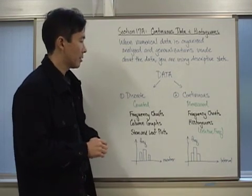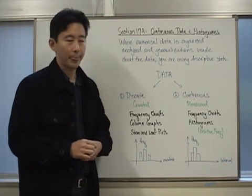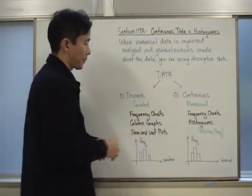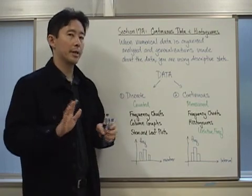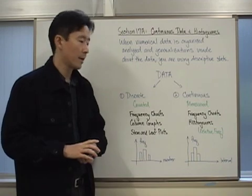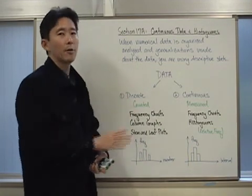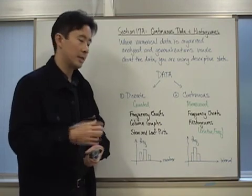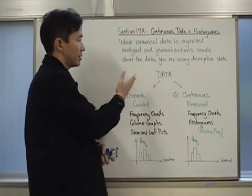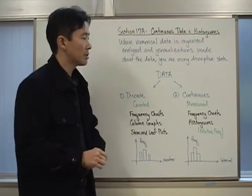They are going to be called discrete data or continuous data. If we want to think about what the difference is between discrete and continuous data, we can think about discrete data as data that is counted. If you can count the number of things that you're talking about in terms of data, then you're talking about discrete data, whereas continuous data would be considered measured data.